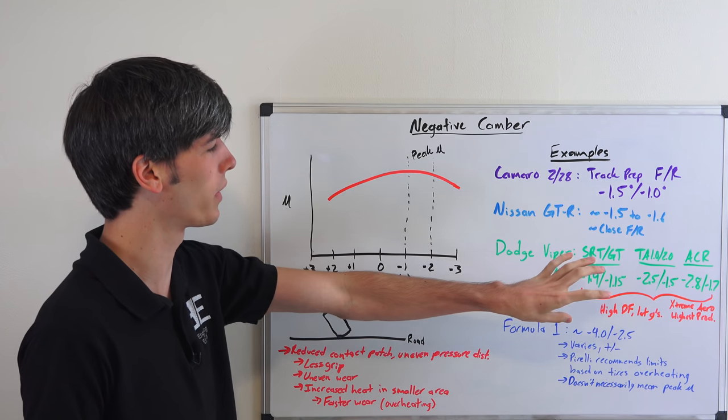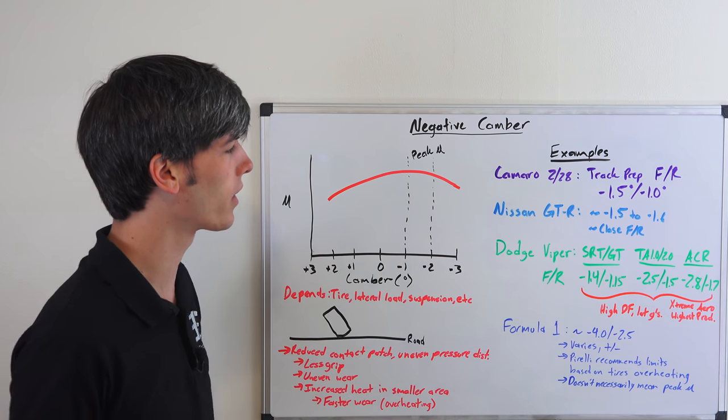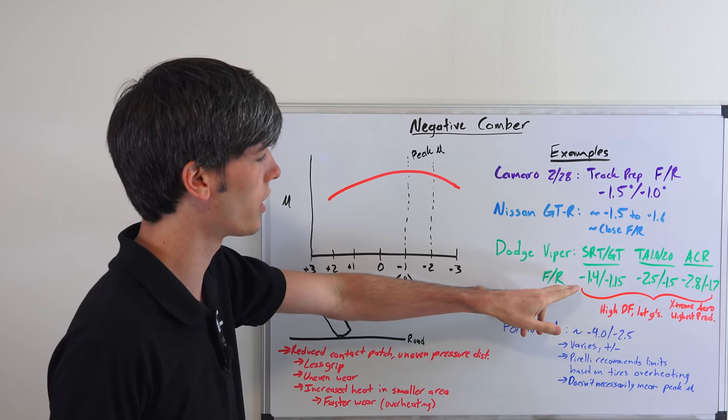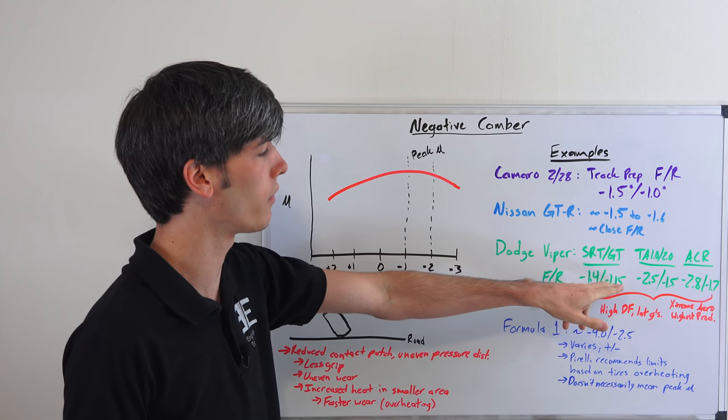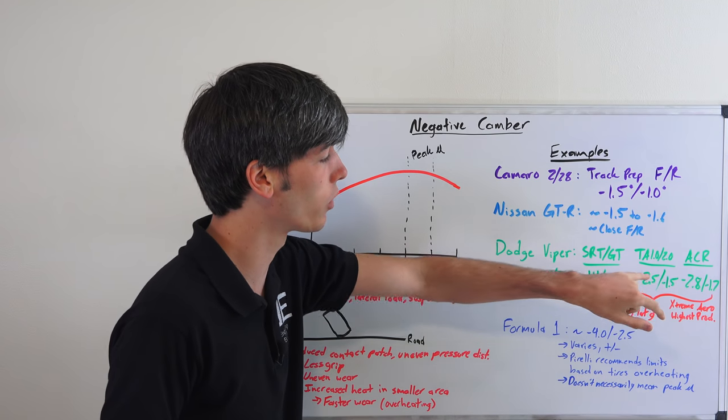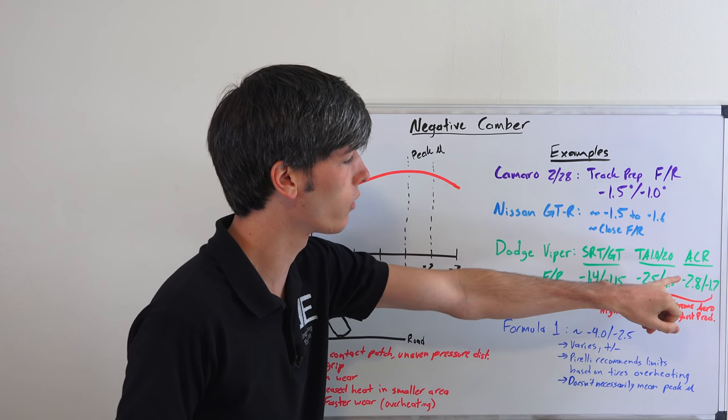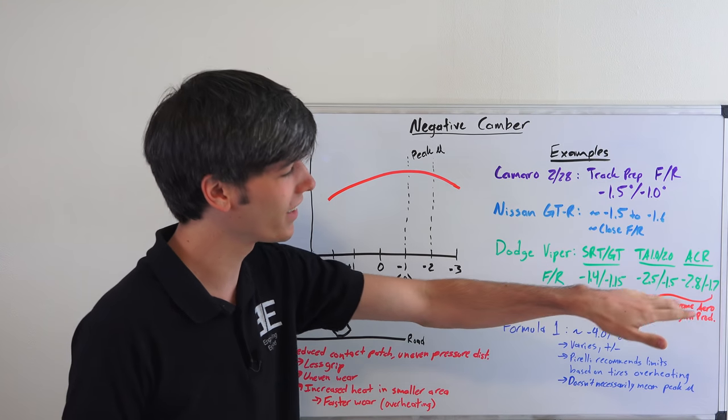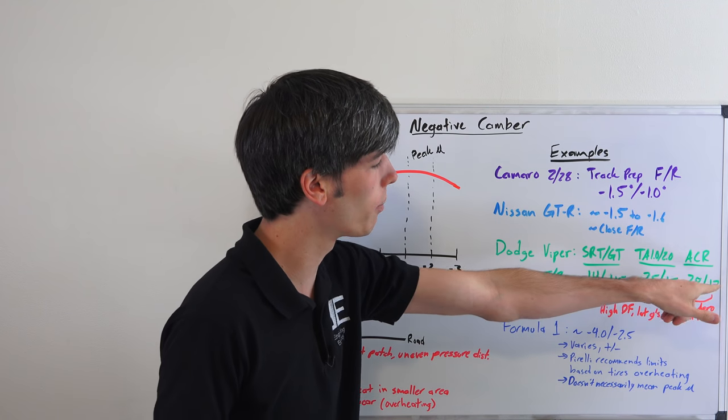This one I thought was pretty interesting: the Dodge Viper, because they have so many different packages in which you can buy it. You've got the SRT GT which is at negative 1.4 in the front, negative 1.15 in the back. The TA 1.0 and 2.0, negative 2.5, so pretty aggressive in the front, negative 1.5 in the rear.